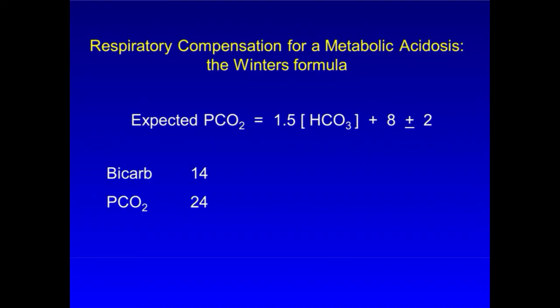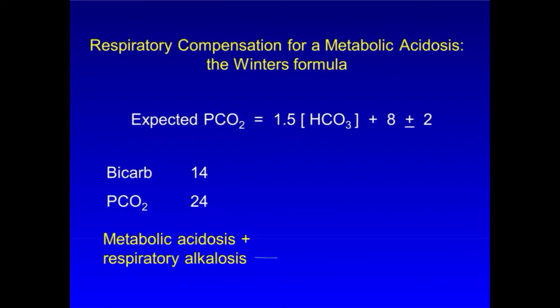In this example, with a serum bicarb of 14, the WINTERS formula predicts a PCO2 of 1.5 times 14, or 21, plus 8, plus or minus 2, or 29, plus or minus 2. The actual PCO2 of 24 reveals the presence of a second disorder, respiratory alkalosis, that is independently causing hyperventilation beyond what is expected.